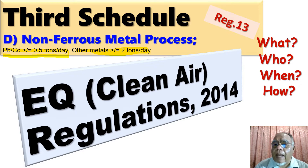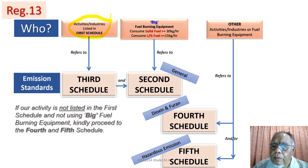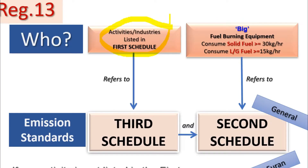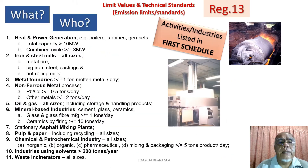Let's recap what we have done so far just in case some of you missed out. If these industries are listed in the First Schedule, all the emissions of air impurities are already listed by the law in the Third Schedule.